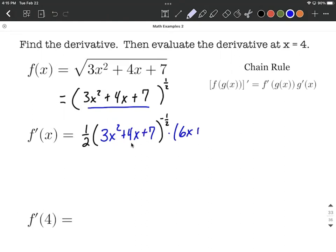Derivative of the 4x is just going to be plus 4 because it's linear. Then the derivative of the 7, because it's a constant, is going to be 0. I'm going to leave off the plus 0 for now.